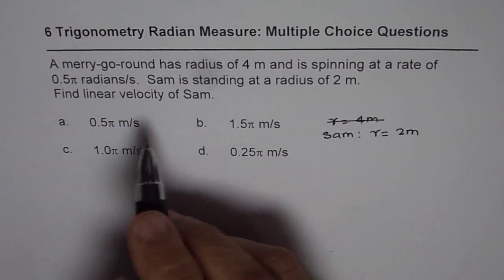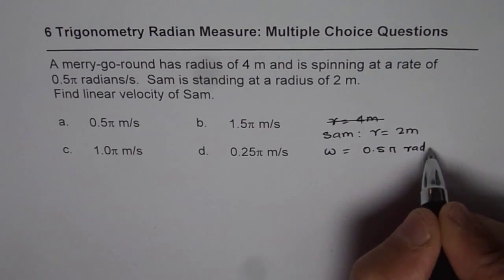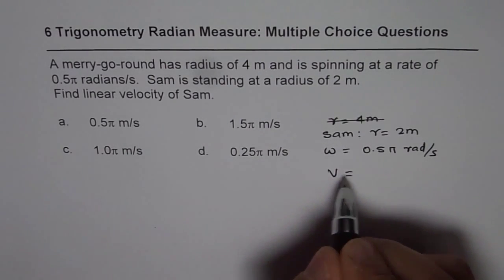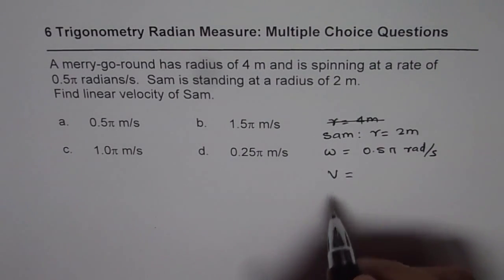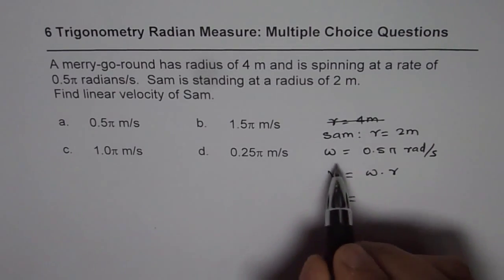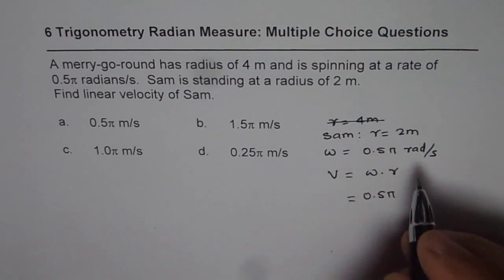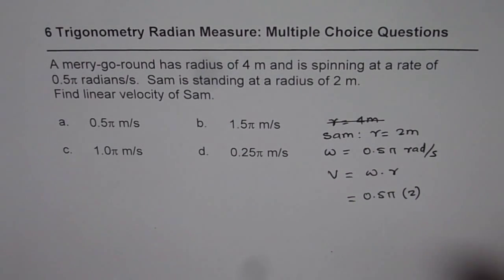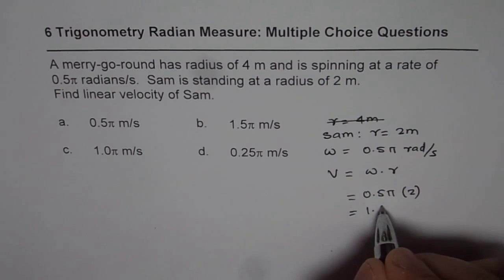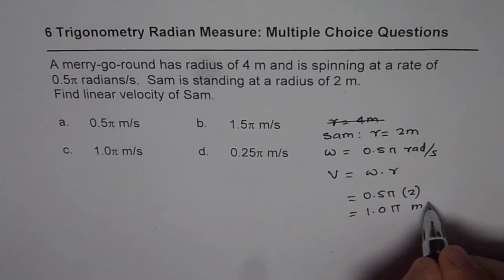We are given angular velocity, which is Omega = 0.5 pi radians per second. We need to find linear velocity for Sam, that is v. The relation which connects these quantities is v equals angular velocity times radius. So Omega is 0.5 pi. Multiply the angular velocity with the radius — the distance of Sam from the center — to get the answer. So what we get here is 1.0 pi, and the units will be meters per second.